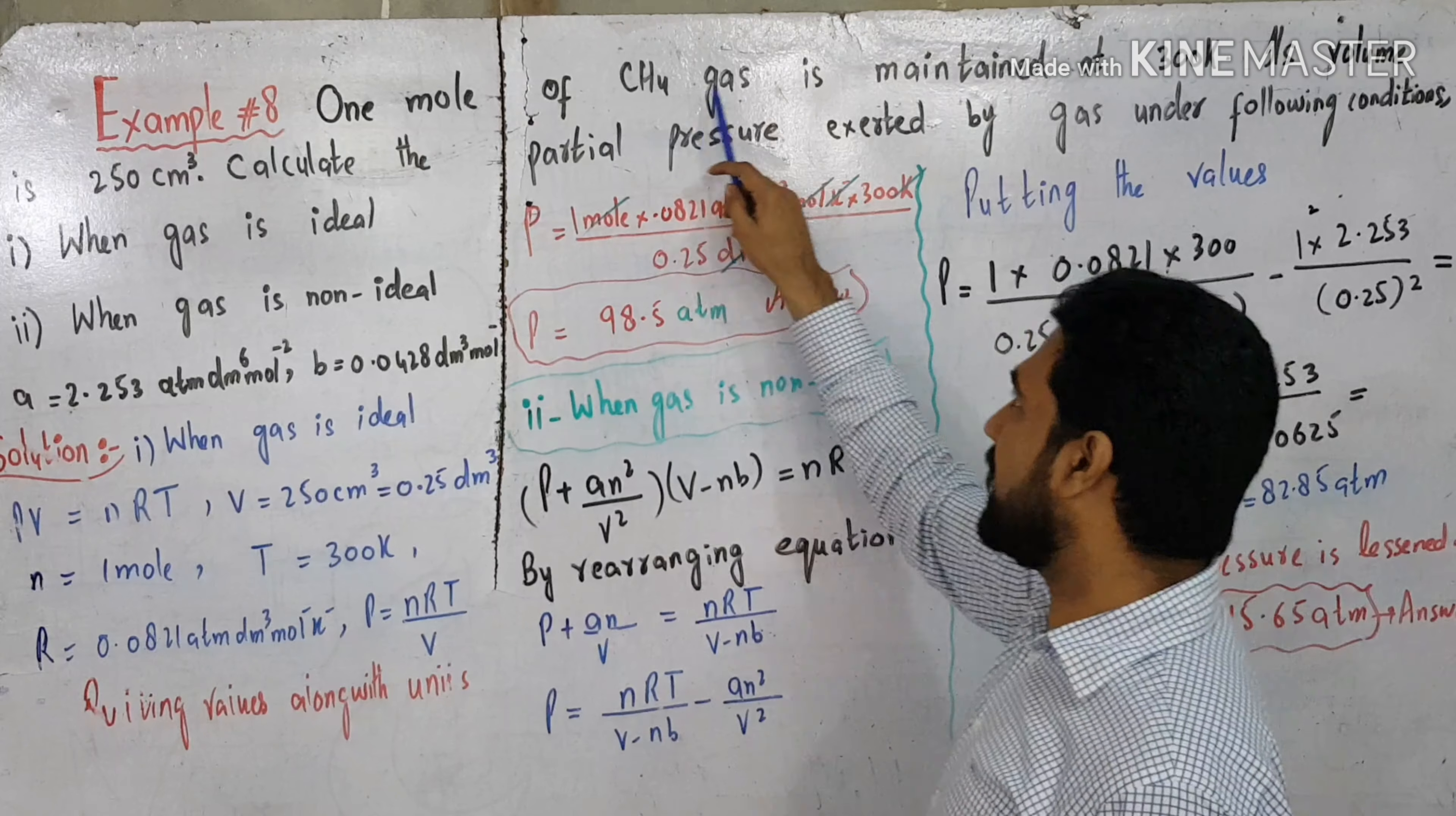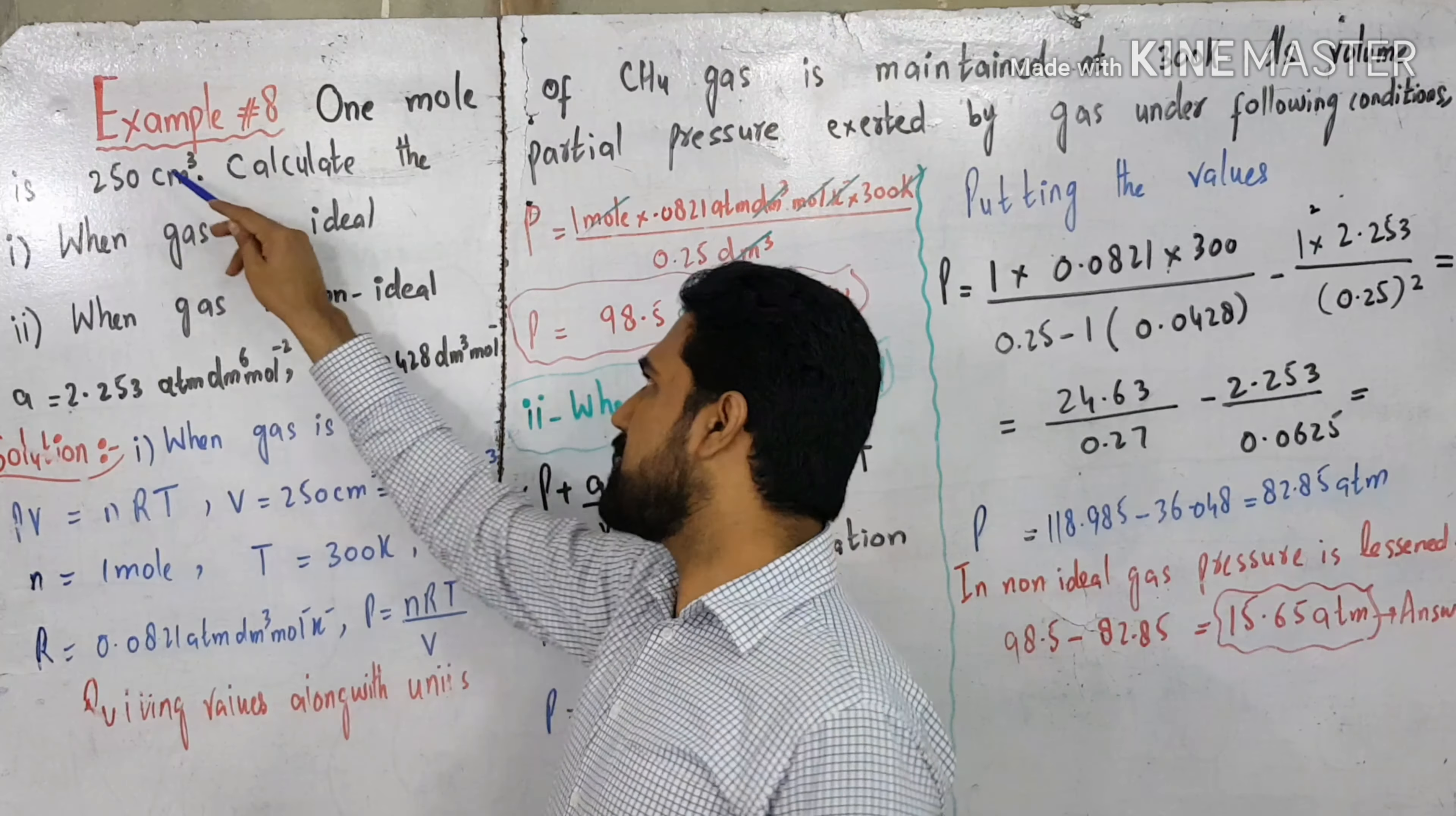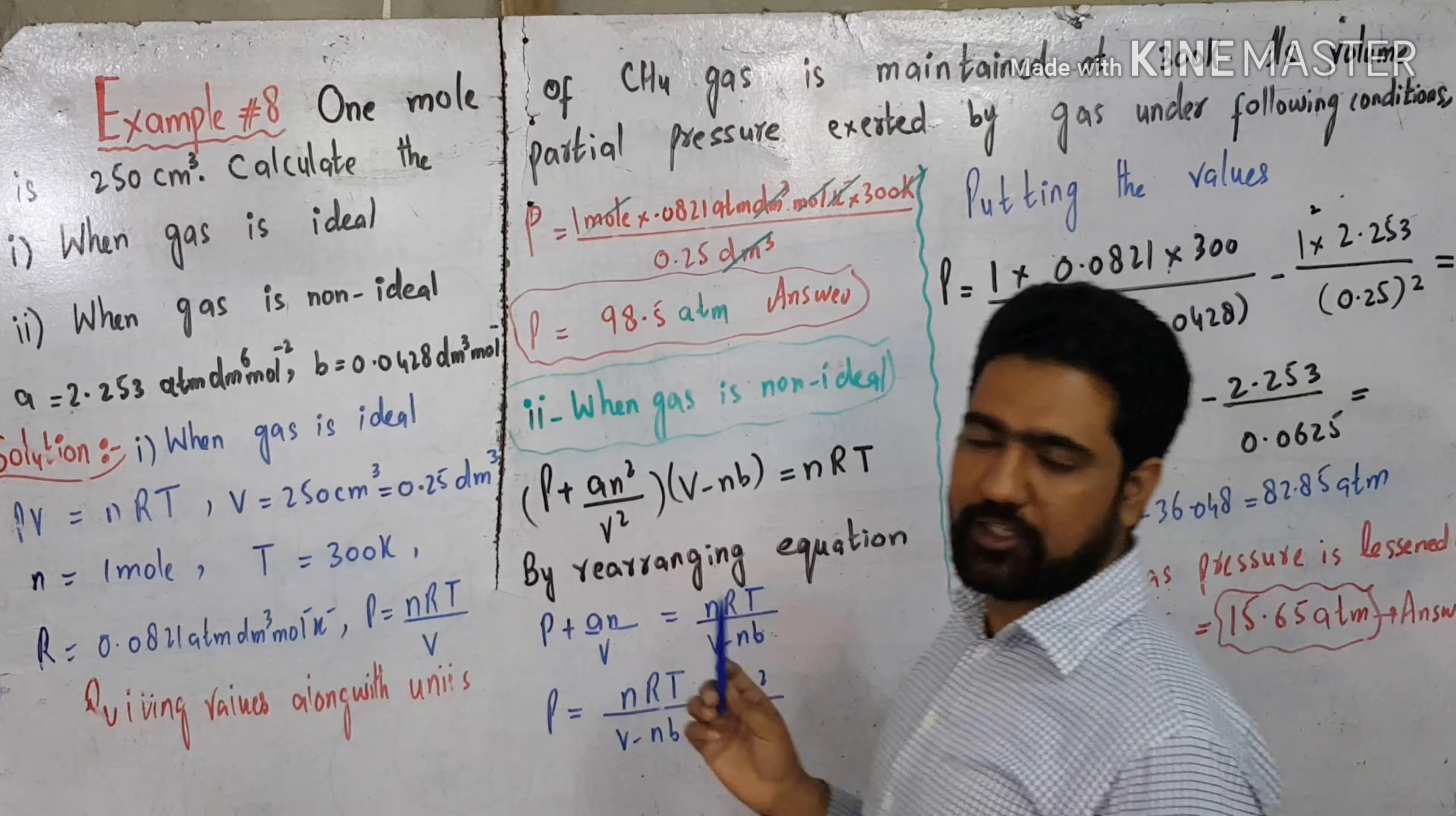One mole of methane gas is maintained at 300 Kelvin. Its volume is 250 cm³. Calculate the pressure exerted by gas under the following conditions.